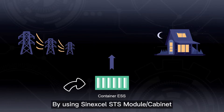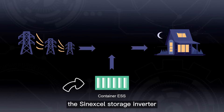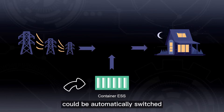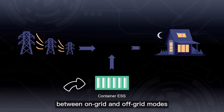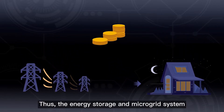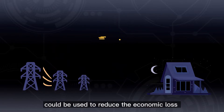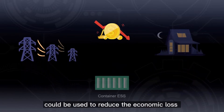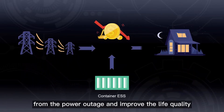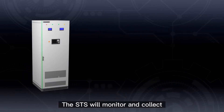By using the Sigenergy STS module and cabinet, the Sigenergy storage inverter can be automatically switched between on-grid and off-grid modes. Thus, the energy storage and microgrid system for commercial and industrial applications can be used to reduce economic loss from power outages and improve quality of life.